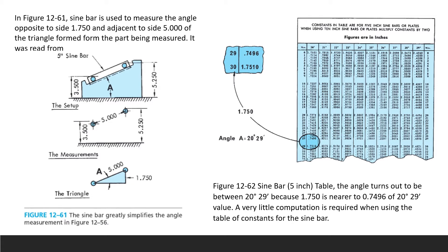Now we are going to use the sine bar to measure the angle opposite to side 1.750 and the adjacent side which is the sine bar length of five inches. Using the sine bar setup, we get five inches for the hypotenuse and heights of 3.5 and 5.25. From the setup we form a triangle: hypotenuse of 5 and height of 1.750, which you get by subtracting. You extract this little triangle, exaggerate it, and draw it to see the sides.